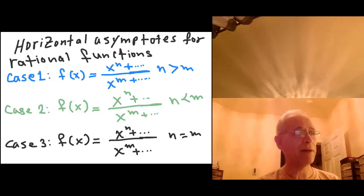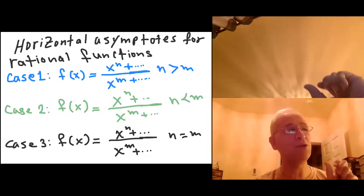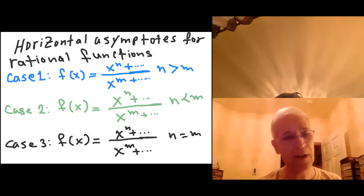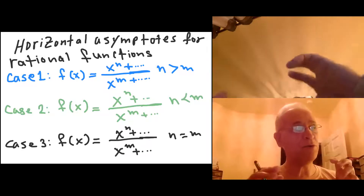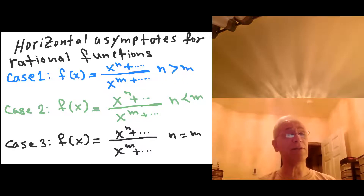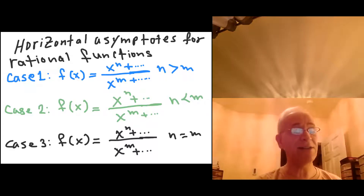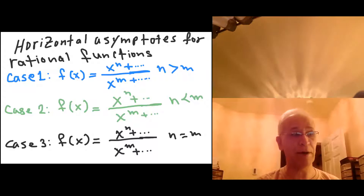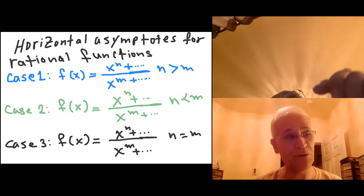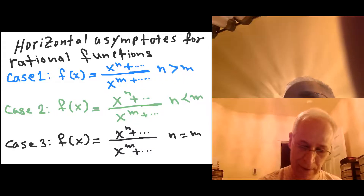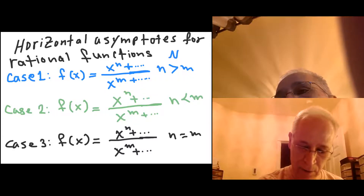Case 1: f of x is such that the highest power of the numerator is greater than the highest power of the denominator. If that's the case, the numerator, as x is getting larger and larger, grows at a faster rate than the denominator. So therefore, if the highest degree of the top is larger than the highest degree of the denominator, there is no horizontal asymptote.